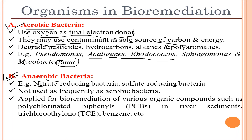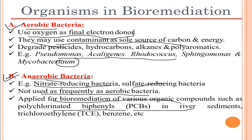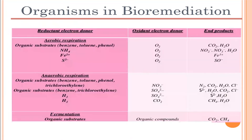Anaerobic bacteria include nitrate-reducing bacteria and sulfate-reducing bacteria, which are always anaerobic in nature. These are not used as frequently as aerobic bacteria. They are applied for bioremediation of various organic compounds such as polychlorinated biphenyls (PCBs) in river sediments, trichloroethylene, and benzene.